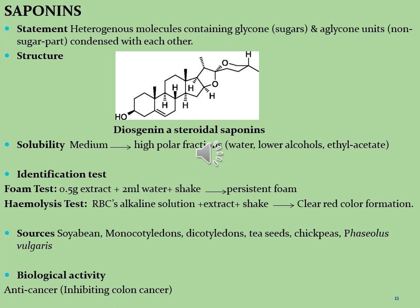Diosgenin is a phytosteroid saponin and is the product of hydrolysis by acids, strong bases, or enzymes of saponins extracted from the tubers of Dioscorea wild yam. Diosgenin from wild yam is often promoted as a natural alternative to estrogen therapy. It is used for estrogen replacement therapy, vaginal dryness in older women, premenstrual syndrome, menstrual cramps, weak bones, osteoporosis, and increasing energy and sexual drive in men and women.